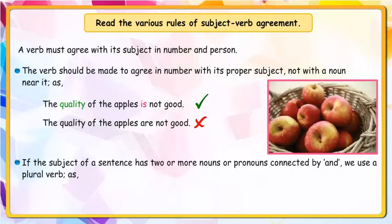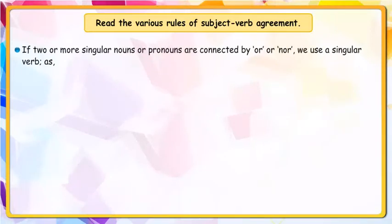If the subject of a sentence has two or more nouns or pronouns connected by 'and', we use a plural verb. For example: 'Ram and Sham are going to the school.'